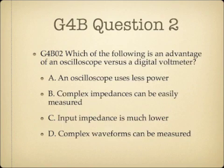Question 2. Which of the following is an advantage of an oscilloscope versus a digital voltmeter? A, an oscilloscope uses less power. B, complex impedances can be easily measured. C, input impedance is much lower. Or D, complex waveforms can be measured.